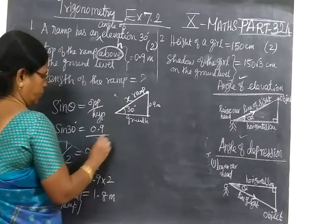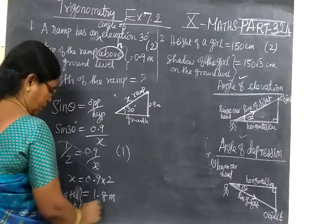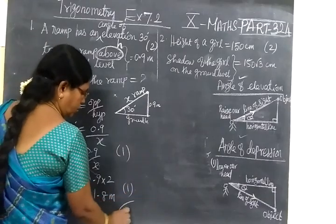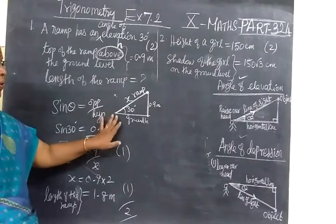This will come under 2 mark question. For this, no mark. For this step, for substitution, one mark. Then for the answer, one mark. So it's 2 marks. No mark for the diagram. This one is marked here.